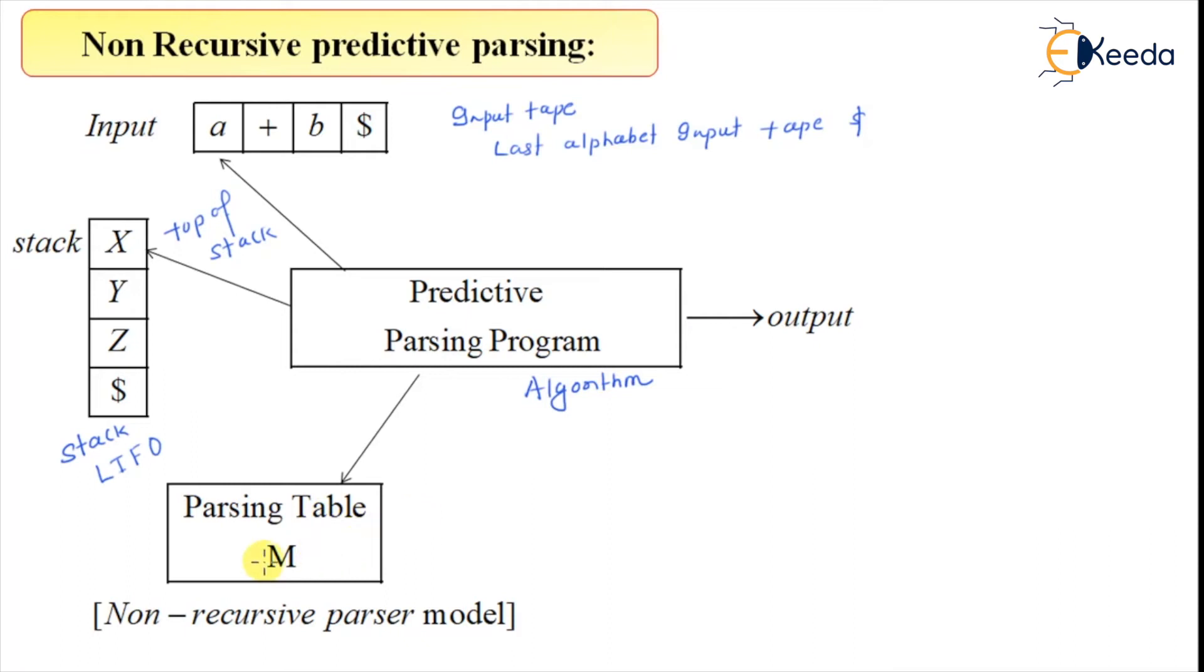The parsing table M is a two-dimensional table where rows consist of non-terminals and columns consist of terminals.